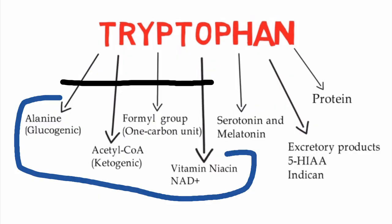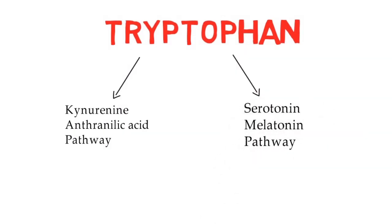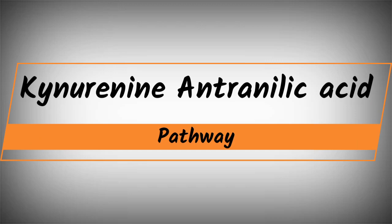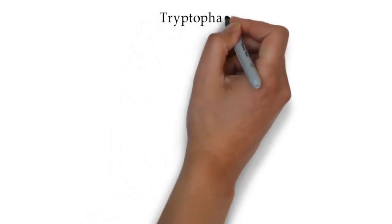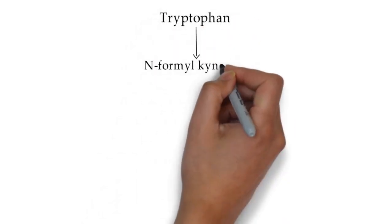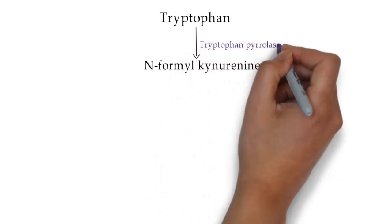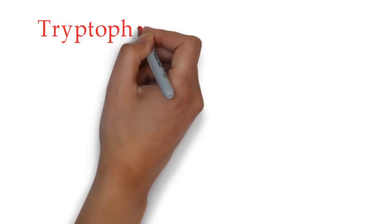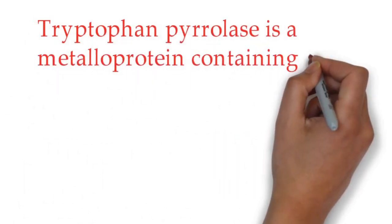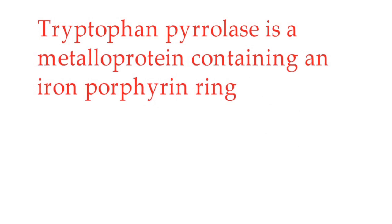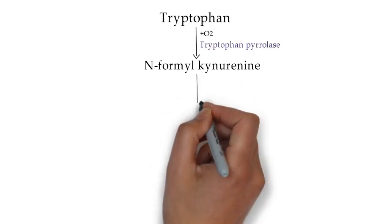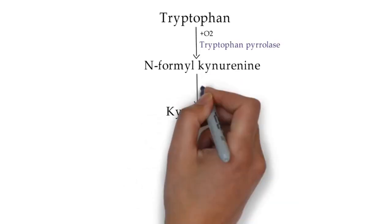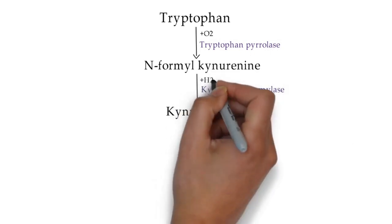There are two main pathways of tryptophan. First is the major catabolic pathway — the kynurenine/anthranilic acid pathway — in which those four substances discussed earlier are formed. Second is the serotonin/melatonin pathway. In this video we discuss the kynurenine/anthranilic acid pathway. In the first step, tryptophan is oxidized to form N-formyl kynurenine by the enzyme tryptophan pyrolase in the presence of oxygen. Tryptophan pyrolase is a metalloprotein containing an iron porphyrin ring, and the enzyme is inducible by corticosteroids.